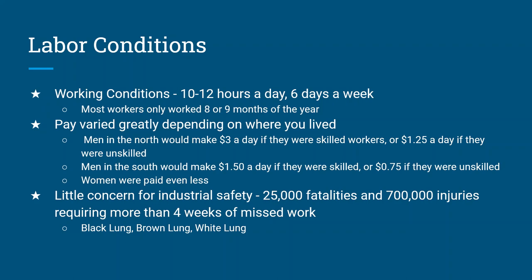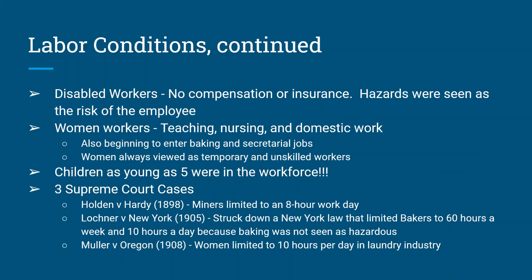There was also very little concern for safety. Today, if you work in a manufacturing center, there are safety regulations in place — none of that existed in the late 1800s. You had things like black lung from breathing in coal, brown lung from breathing in textiles and fabric dust, and white lung from breathing in baking materials. Fatalities and injuries requiring over a month off work were very common. If you were hurt on the job, there was no compensation, no insurance — hazards were deemed the risk of the employee.